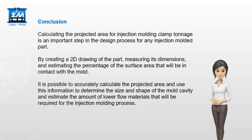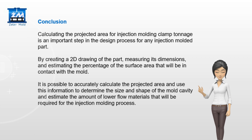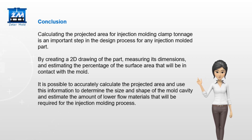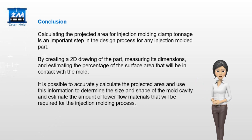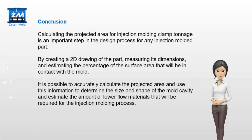Conclusion. Calculating the projected area for injection molding clamp tonnage is an important step in the design process for any injection molded part. By creating a 2D drawing of the part, measuring its dimensions, and estimating the percentage of the surface area that will be in contact with the mold, it is possible to accurately calculate the projected area and use this information to determine the size and shape of the mold cavity and estimate the amount of material required for the injection molding process.